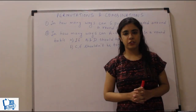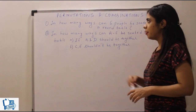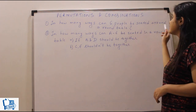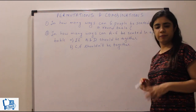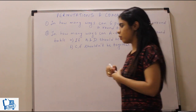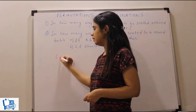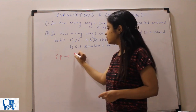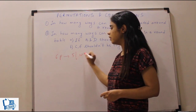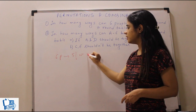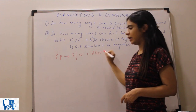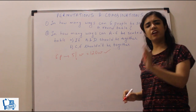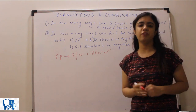Now let's look at a few questions. The first one: in how many ways can six people be seated around a circular table? Like we saw, six people will be seated in 6-1, which is 5 factorial ways. 5 factorial is 120 ways. So this becomes your answer — simple question: six people, 5 factorial; N people, N-1 factorial.